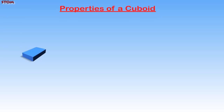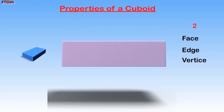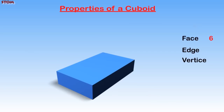Properties of Cuboids. Let's count the surfaces as they are highlighted: one, two, three, four, five, and six. We can see it has six faces. For the edges, let's also count: one, two, three, four, five, six, seven, eight, nine, ten, eleven, and twelve. It has twelve edges, the same as the cube.